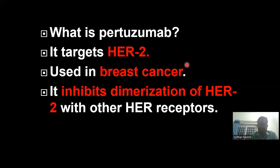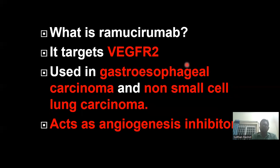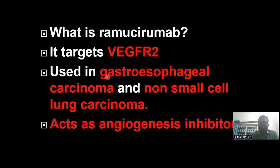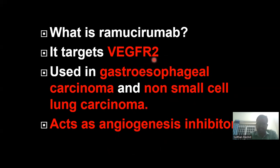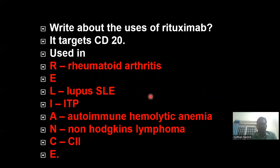Now comes ramucirumab. It targets VEGFR-2 — vascular endothelial growth factor receptor 2. It is used in the condition called gastroesophageal carcinoma as well as non-small cell lung cancer. It also acts as an angiogenesis inhibitor.